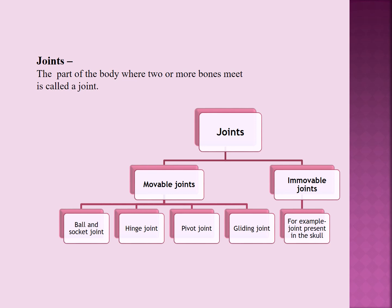First, what do you understand by joints? The part of the body where two or more bones meet is called a joint. Joints can be further divided into two types: movable joint and immovable joint.